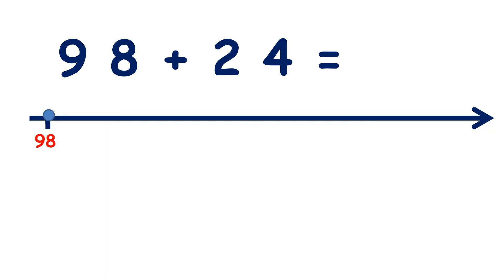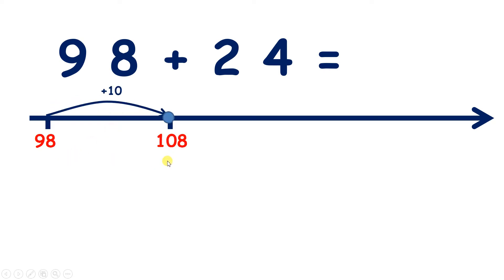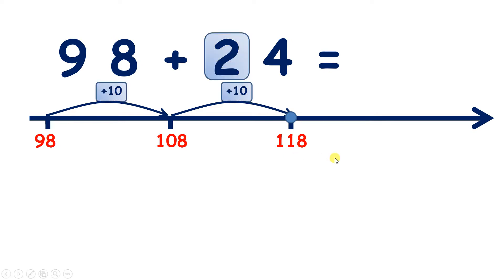Now we have 98 add 24. Pause the video and see if you can count on two 10s and four units from 98. Adding 10 takes us to 108. Another 10 takes us to 118. So we've added two 10s, now we just need to add our four units, so let's count on four from 118.